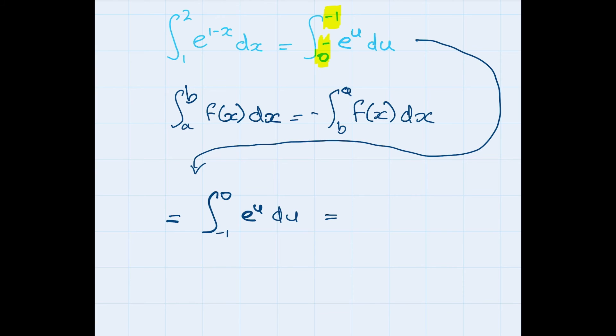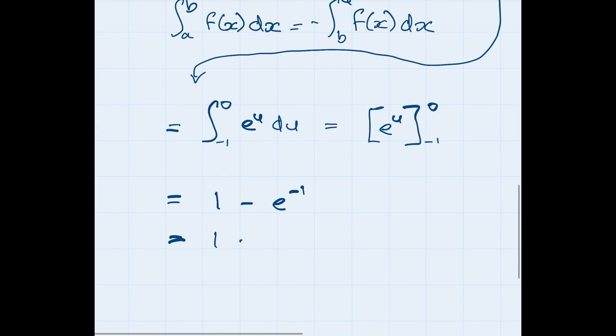The anti-derivative of e to the u is easy, it's just e to the u between minus 1 and 0. So now we just need to evaluate. When u equals 0 we're going to get e to the 0 which is 1, and when u equals minus 1 we're going to get e to the minus 1. So all in all we're going to have 1 minus 1 over e. And that is our final answer.